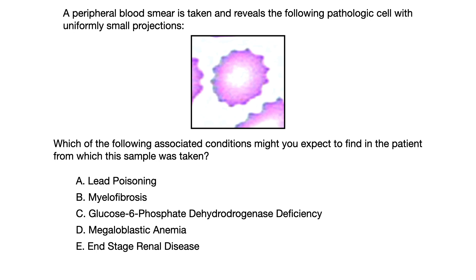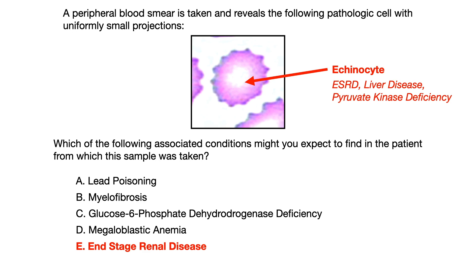If you'd like some time to think about this question, please pause the video now. The correct answer to this practice question is choice E, end-stage renal disease. The reason this is the correct answer is because the cell shown in the image is an echinocyte.